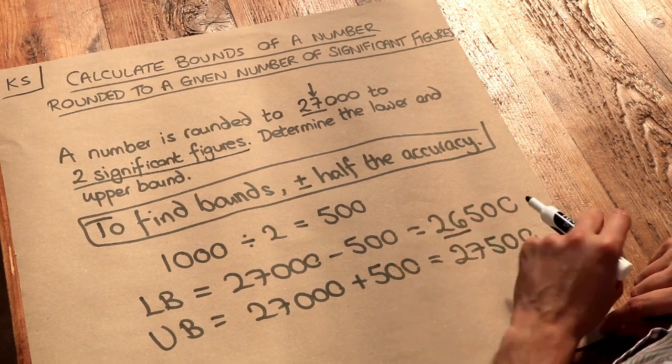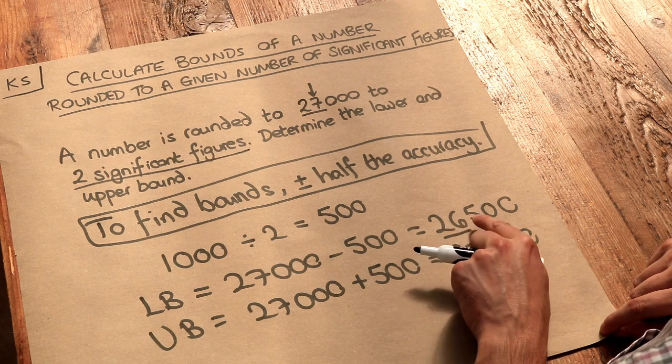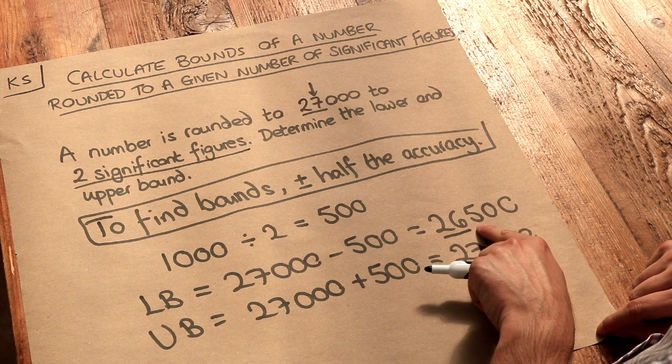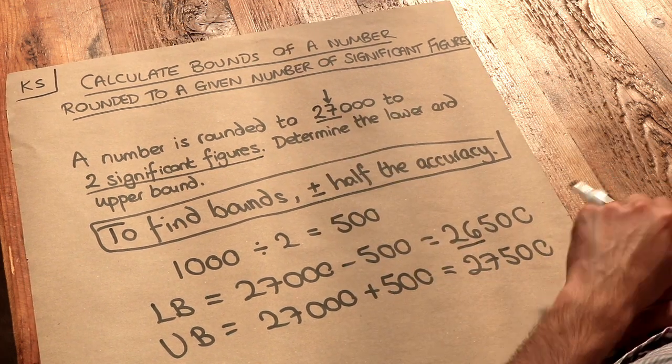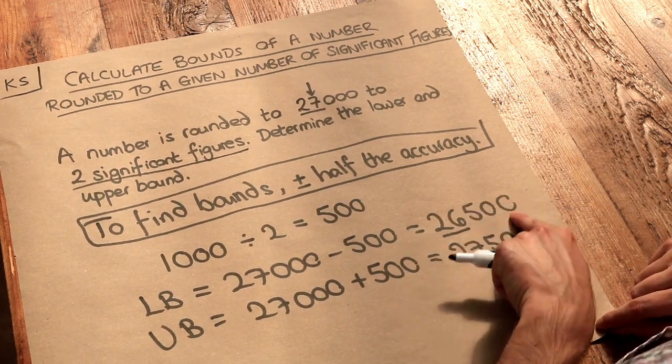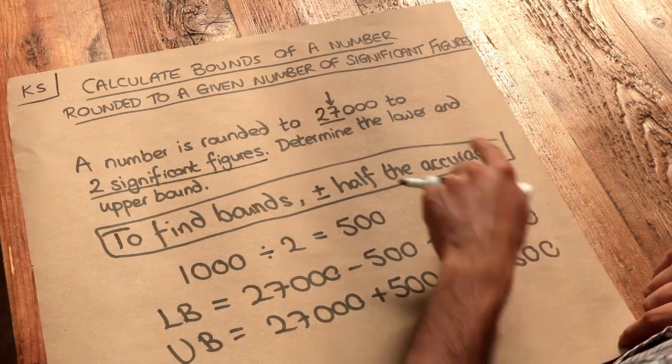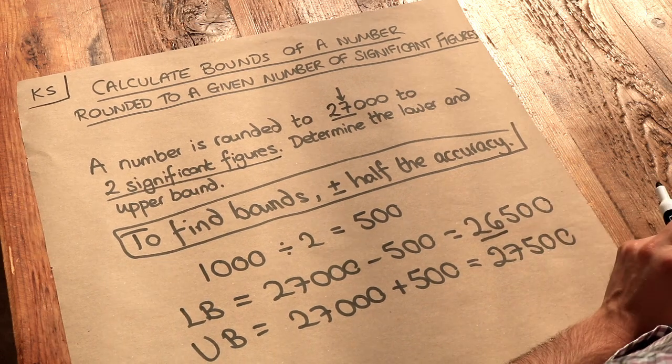But if we had any less than this, for example, we had 26,499, that to the nearest thousand would be 26,000, which is not 27,000, so that would be too low. So indeed, this is the smallest number we could have had that would have rounded to 27,000. So that is the lower bound, as we call it.